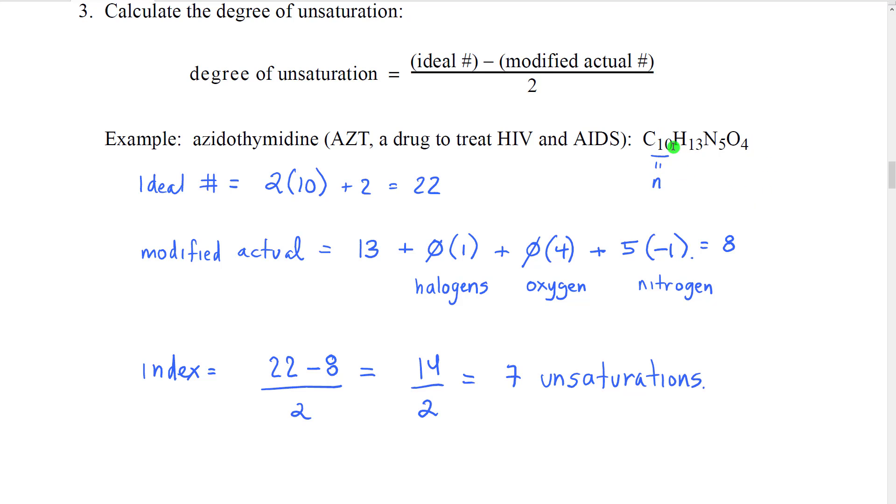We're going to start by looking at the number of carbons, which is 10, and determining our ideal number of hydrogens. So 2 times 10 plus 2. Ideally, if this were an alkane, it would have 22 hydrogens. We're then going to take our actual number of hydrogens, which is 13, and we're going to modify it. We're going to add one for each halogen. In this case, there are no halogens in the formula. So zero halogens times adding one is the net effect of zero.